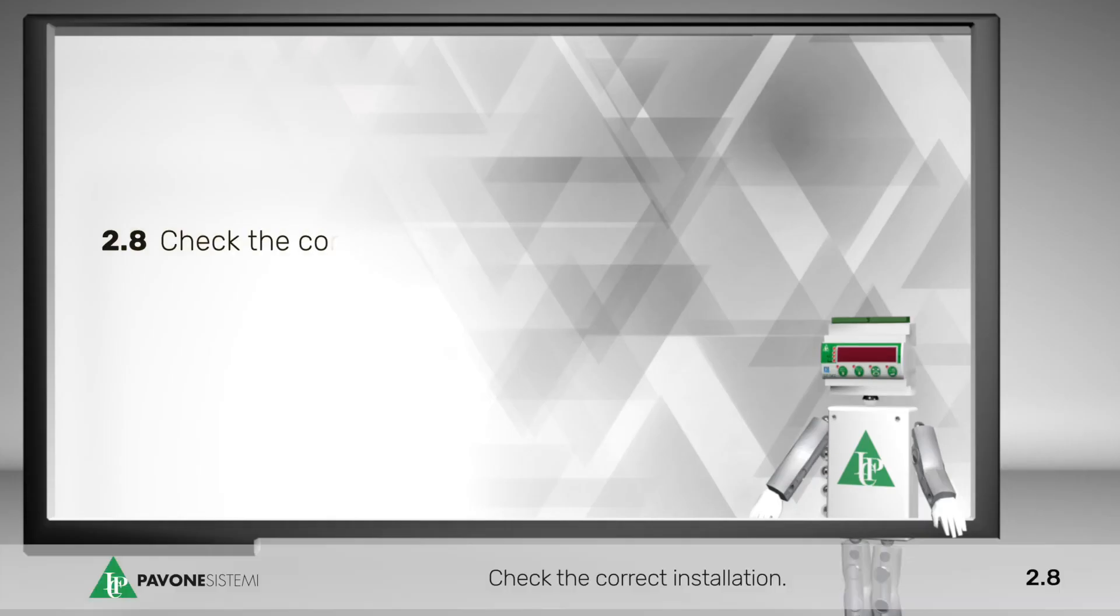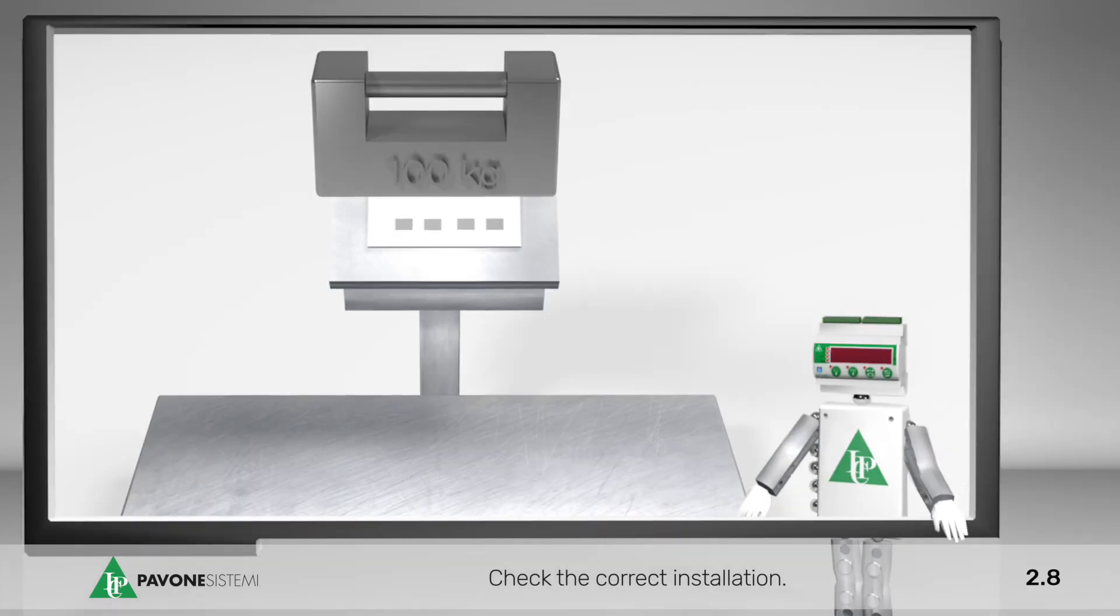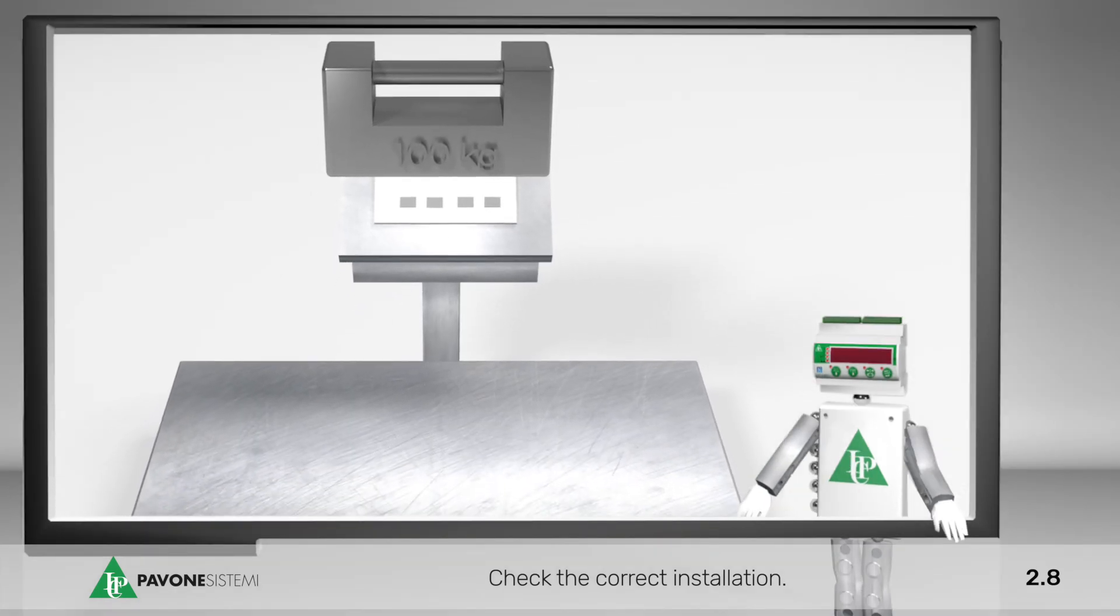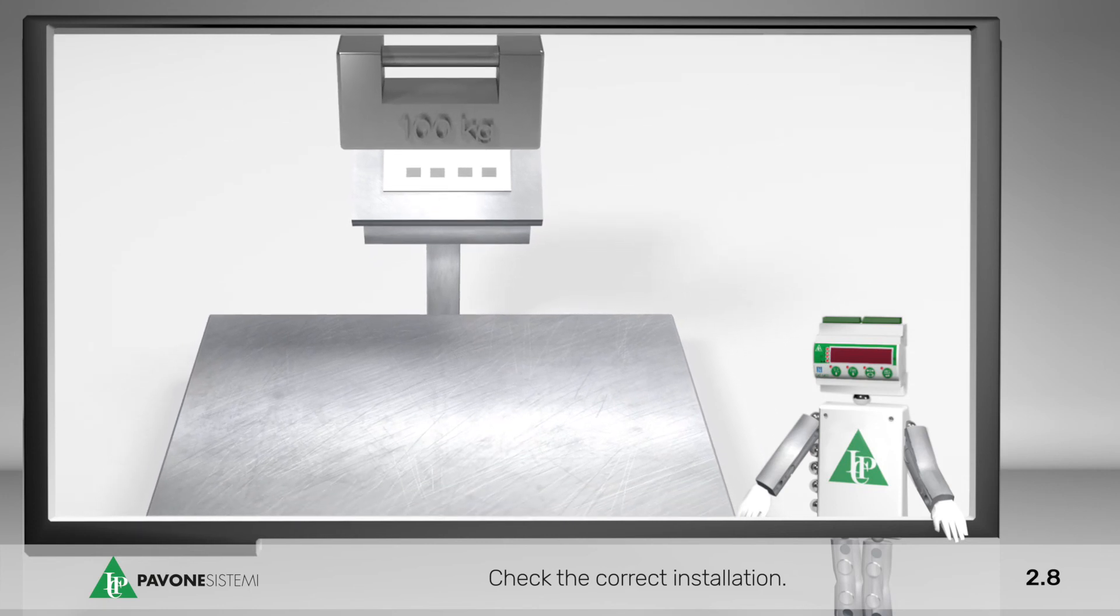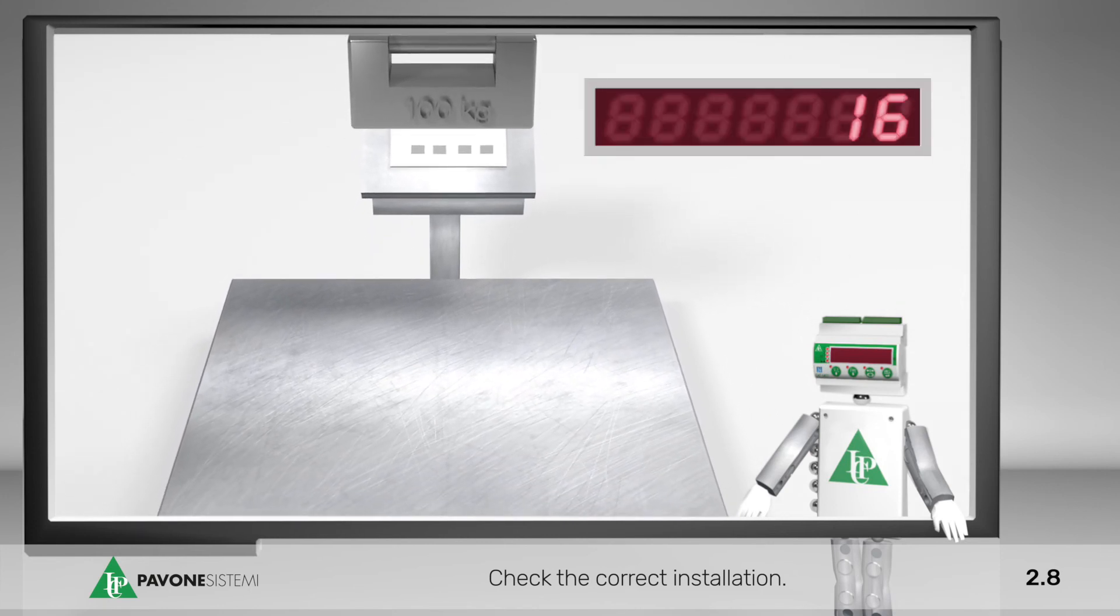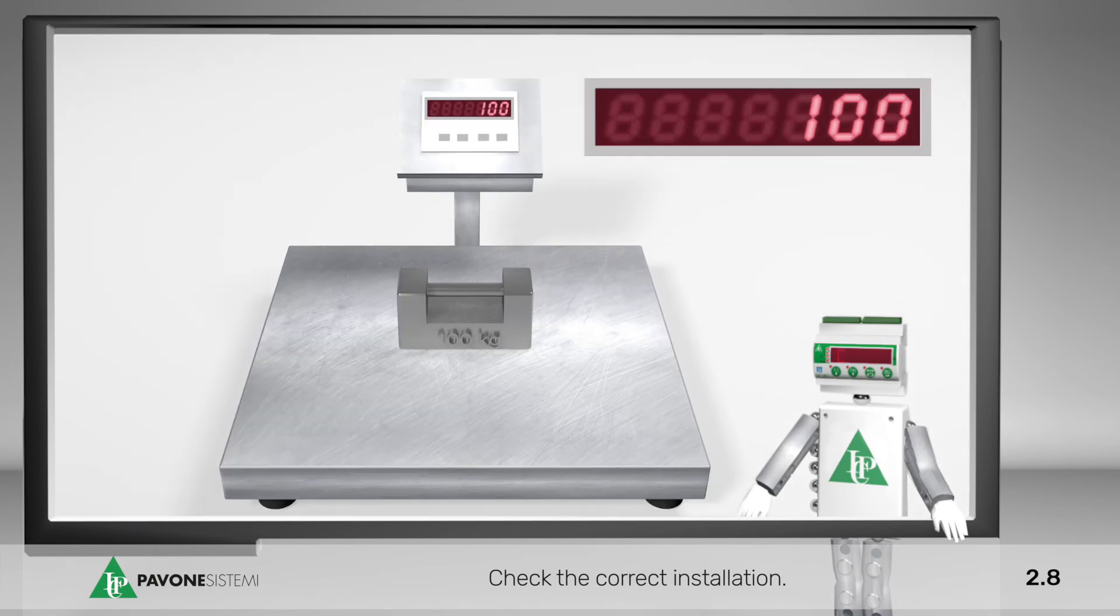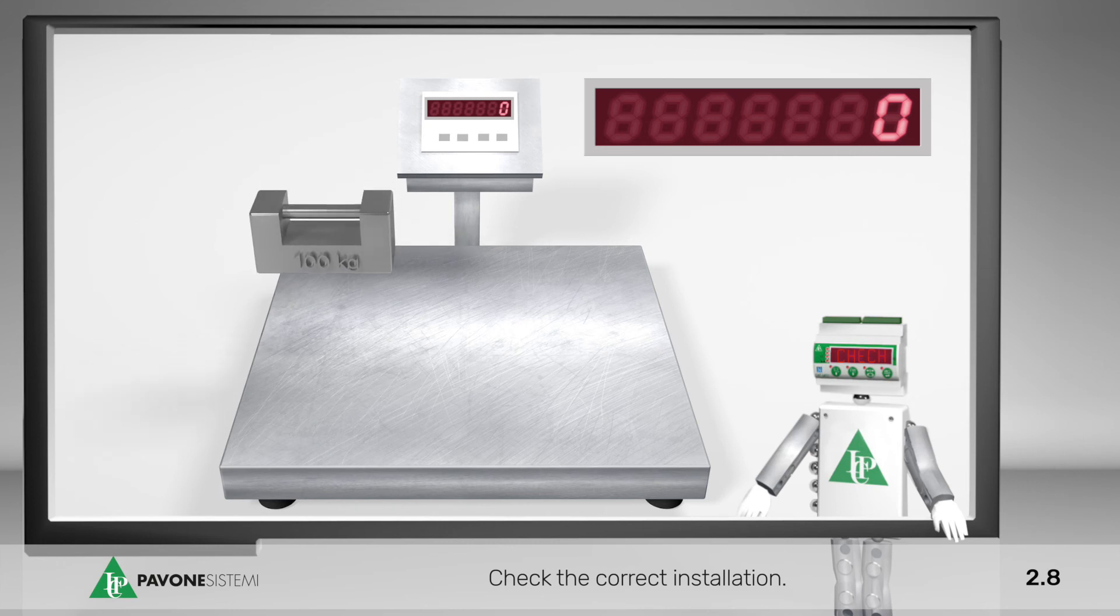Check the correct installation. To verify the correct mechanical installation and the effectiveness of the weighing system, perform the following tests, carrying out a zeroing of the weighing indicator of the load cell. Apply a known load to the center and then to all the corners.